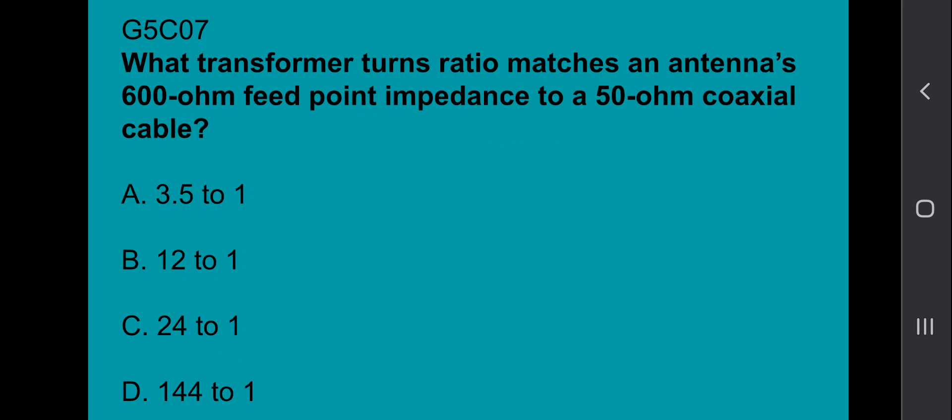G5C07: What transformer turns ratio matches an antenna 600 ohm feed point impedance to a 50 ohm coaxial cable? That's 3.5 to 1.